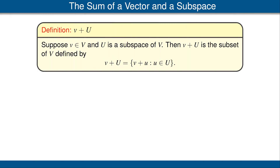We begin by defining the sum of a vector and a subspace. Suppose v is a vector in our vector space V, and U is a subspace of V. Then we define the vector plus the subspace to be the subset of V defined by adding every element of the subspace to the vector.